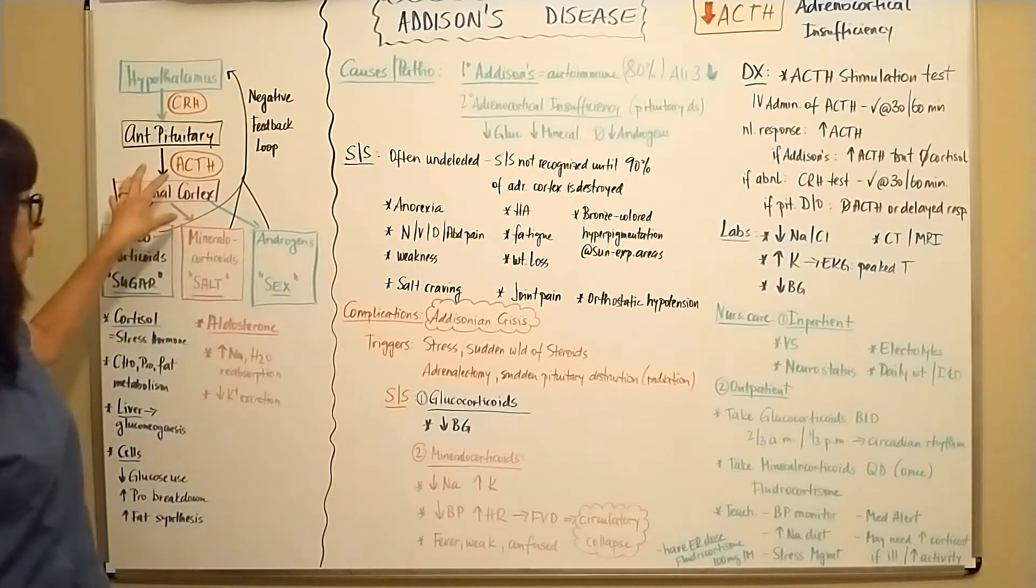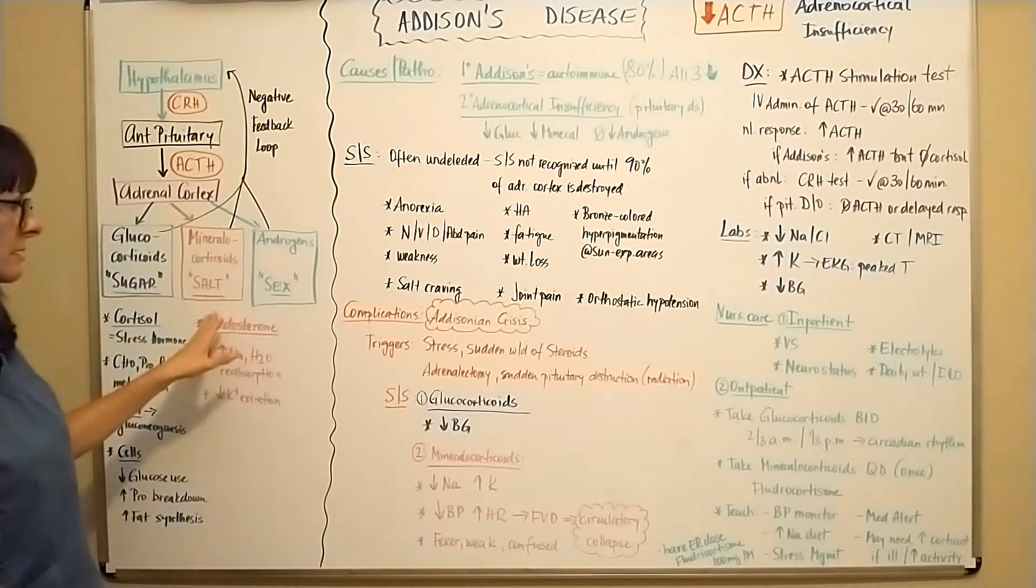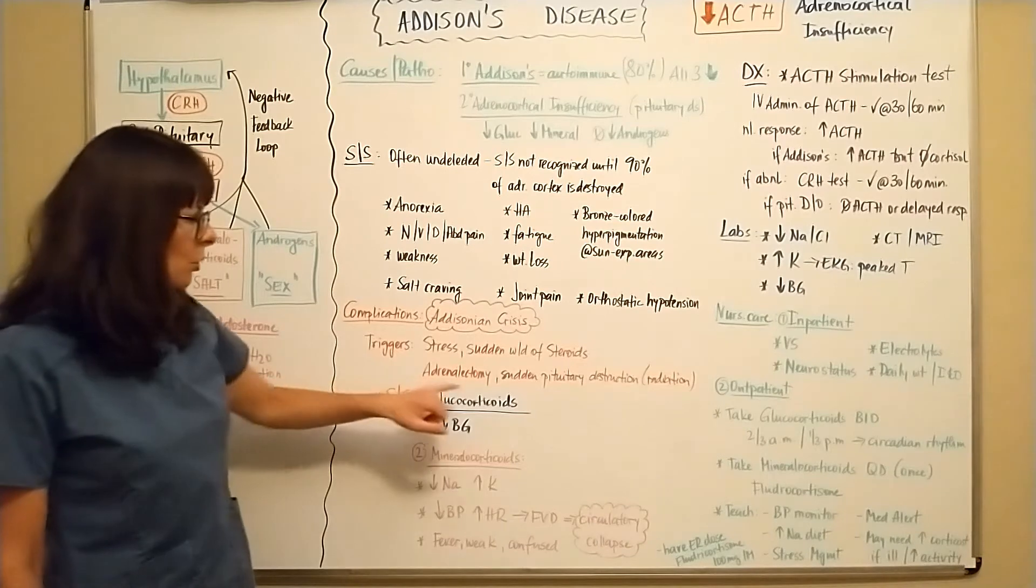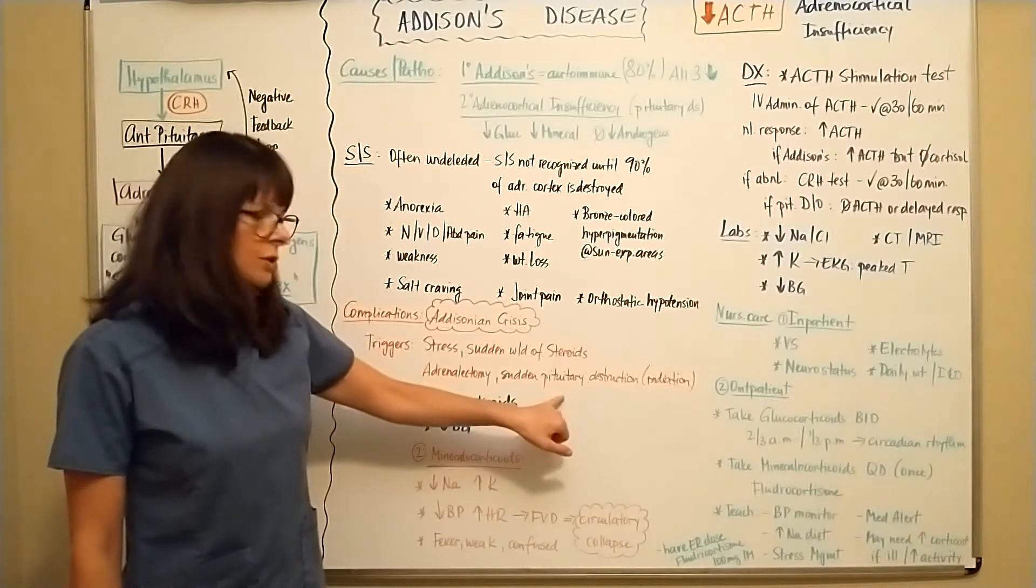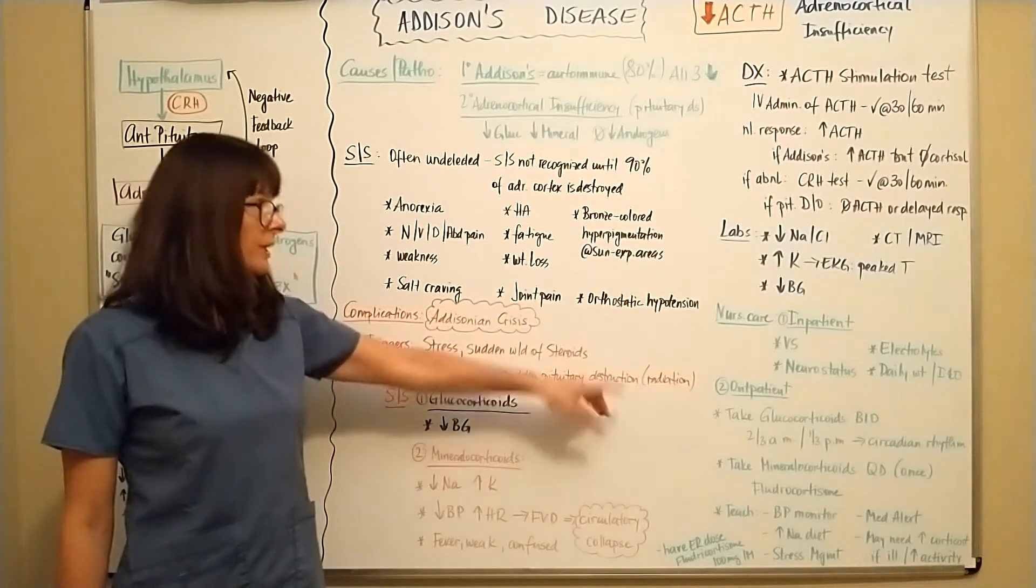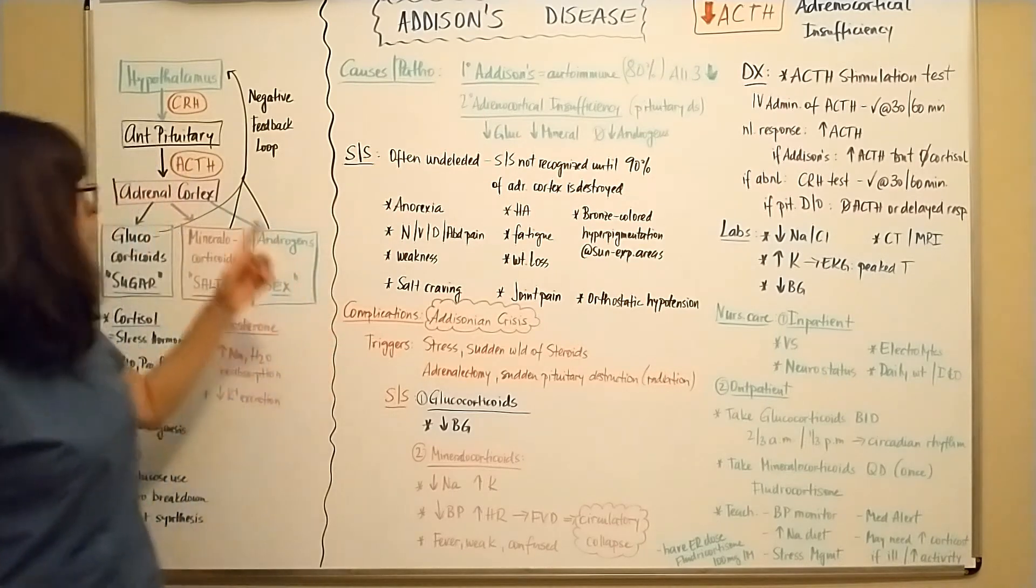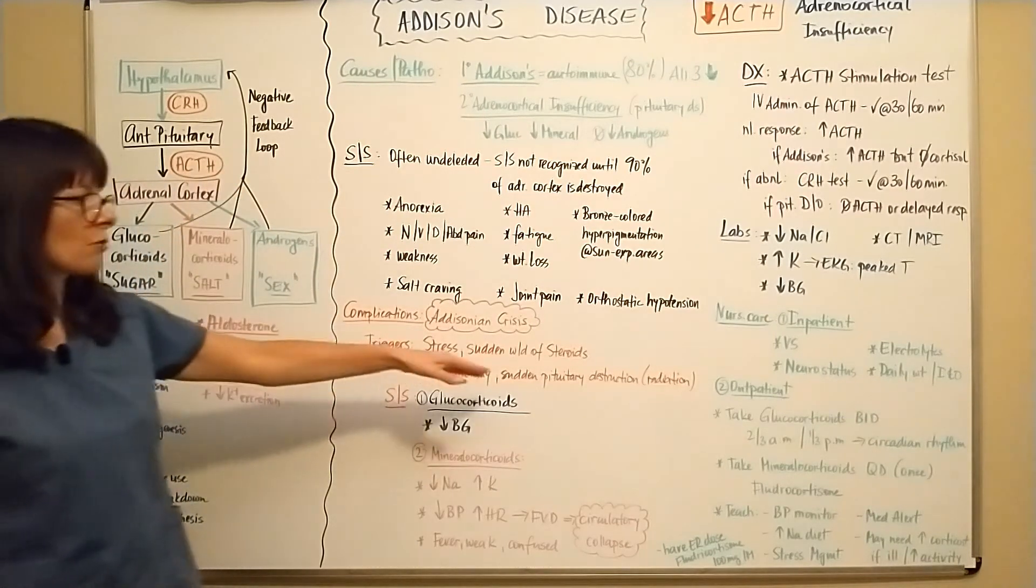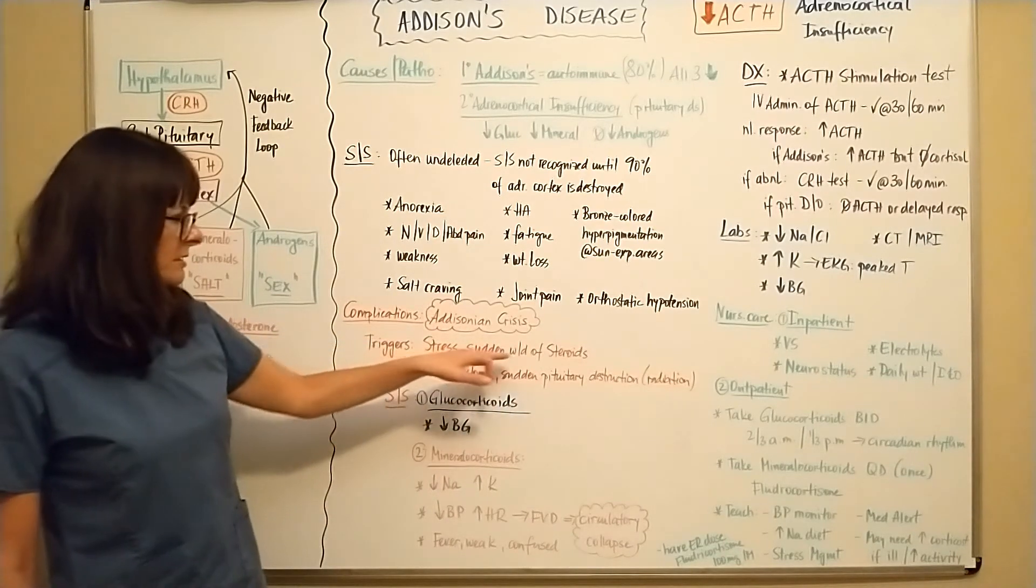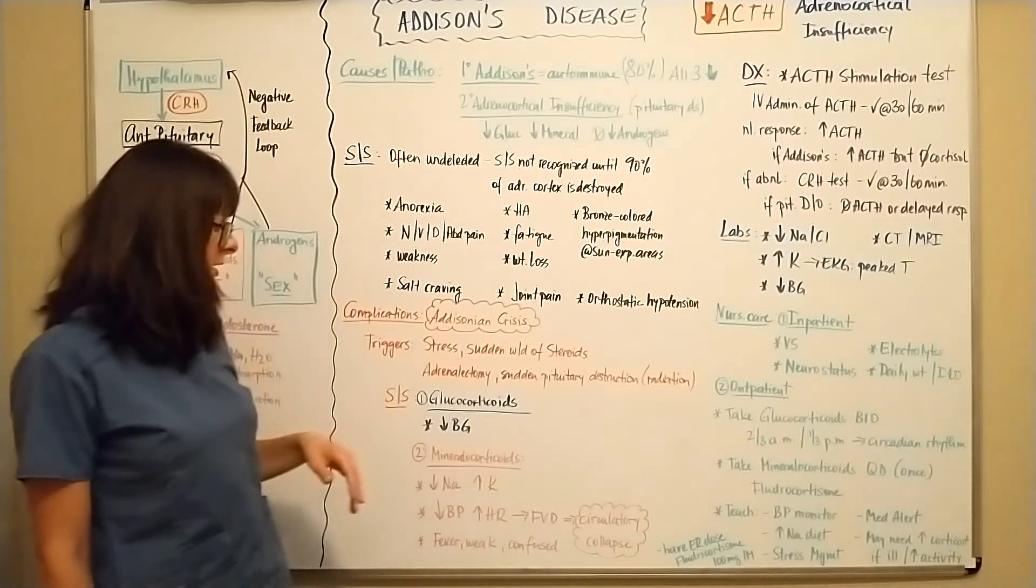Adrenalectomy. So if the adrenal cortex is suddenly removed, it cannot produce any of these 3S hormones, and then will lead to an Addisonian crisis. Or if there is sudden destruction of the pituitary glands, such as in radiation, and that would be the treatment for Cushing's disease, which is the opposite, because a tumor would produce increased ACTH. But we would want to get rid of that if it was the opposite Cushing's disease. So triggers can be stress, sudden withdrawal of steroids, adrenalectomy, or sudden pituitary destruction due to radiation.